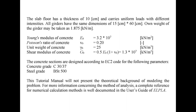All girders have the same dimension of 15 cm by 60 cm. The self-weight of the girder may be taken as 1.875 kN per meter. Young's modulus of concrete is 3.2×10⁷ kN/m², Poisson's ratio of concrete is 0.2, unit weight of concrete is 25 kN/m³, and shear modulus of concrete is 1.3×10⁷ kN/m². The concrete sections are designed according to EC2 code.